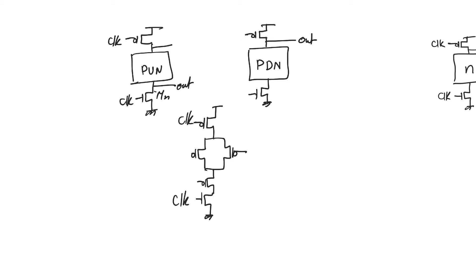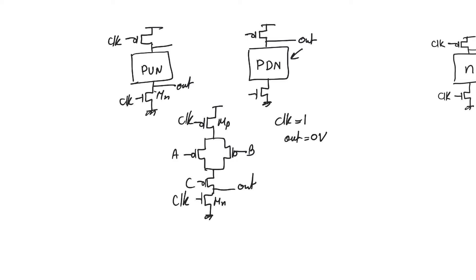The output node is next to the NMOS transistor, so the output node is either going to be 0 volt or VDD. When the clock is equal to 1, transistor MN is on and transistor MP is off. This causes the output voltage to drop to 0 volt regardless of the inputs A, B, and C. So when the clock is 1, the output is always 0 volt. We call this phase pre-discharge, analogous to the pre-charge phase in normal dynamic gates. The output has no logic value — it is just preparing 0 volt for evaluate.